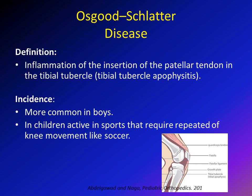Before we go into the definition of Osgood-Schlatter disease, let me show you this picture of the anatomy of the knee in skeletally immature patients. We see the proximal tibial growth plate or proximal tibial physis, and the distal femur growth plate. The proximal tibial physis separates the metaphysis from the epiphysis. This part of the epiphysis is called the tibial tubercle or tibial apophysis — we call it apophysis because it's not part of the knee joint, and because it's subjected to traction stress from the attachment of the patellar tendon.